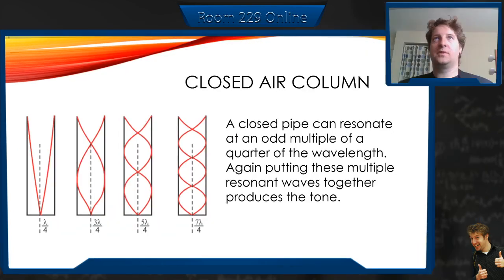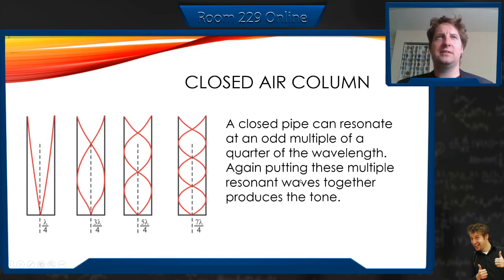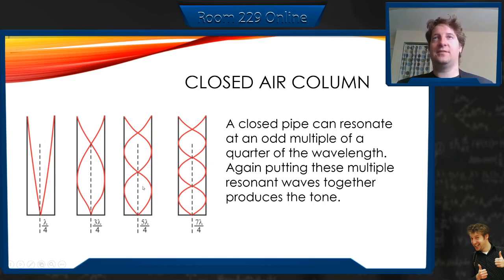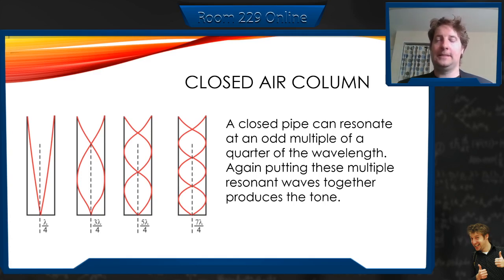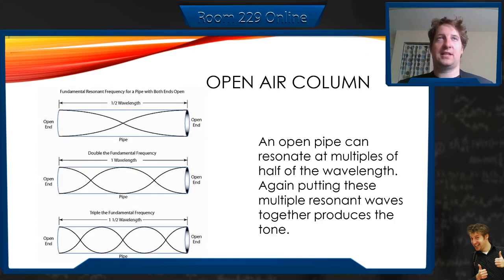A closed air column — same idea. These are these quarter wavelengths. I start this by blowing over something, having some sort of mouthpiece that starts the oscillation, and then the length of it produces the note. There will be the main note, but then overtones are produced as well, and that gives it the sound — comparing a trumpet to a clarinet. A closed pipe can resonate at odd multiples of a quarter wavelength. A string is fixed on both ends. A closed air column is fixed on one end. An open air column is open on both ends.